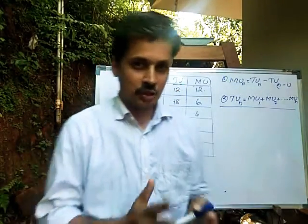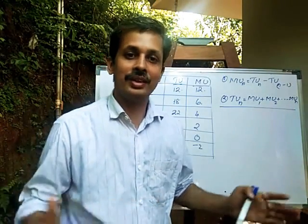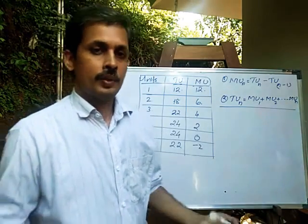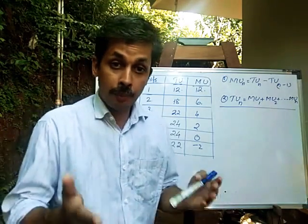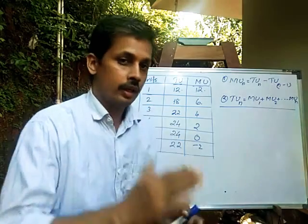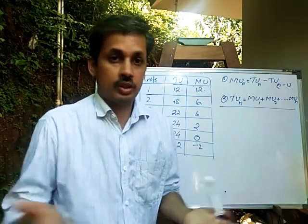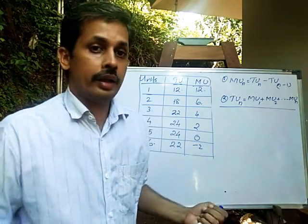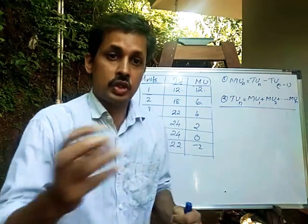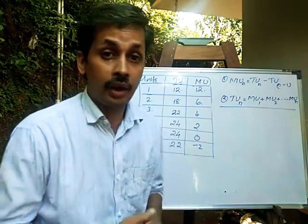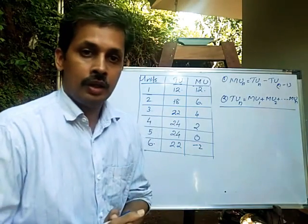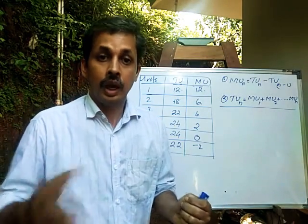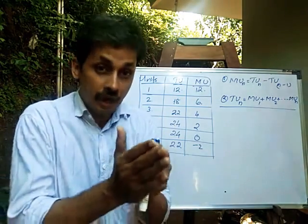Good morning students, welcome to Sambathika Shastra online class. We are discussing the second chapter of microeconomics. There are two approaches to utility analysis: cardinal utility analysis and ordinal utility analysis. We discussed about cardinal utility analysis.